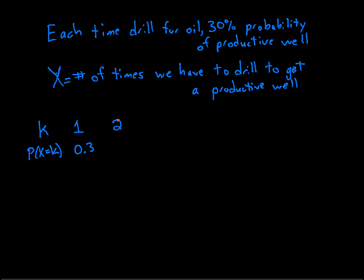What about k equals 2? Well k equals 2 if we have to drill twice to get the productive well, which would mean that the first drilling was unsuccessful while the second drilling was successful. So the probability of the first drilling being unsuccessful is 0.7, and the probability of the second drill being successful is 0.3.